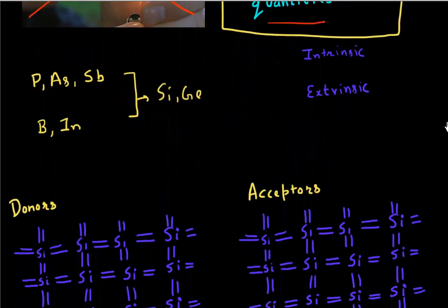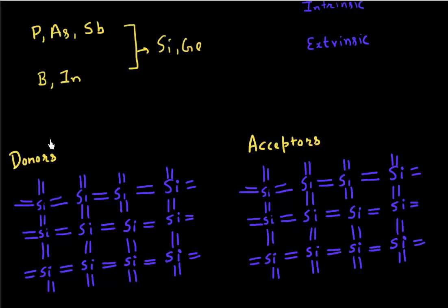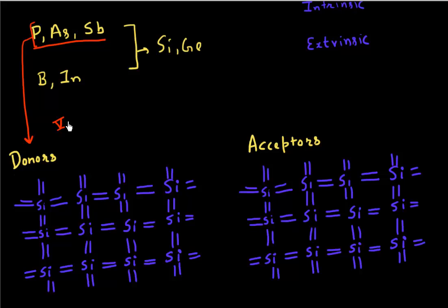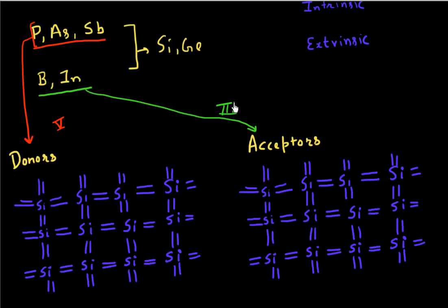The first thing I want you to imagine is what happens in terms of a bond model. What happens if you introduce things like phosphorus, arsenic, or antimony? These are the common donors because they have five electrons in their outermost shell — they belong to group five in the periodic table. And this other set of atoms such as boron or indium, they belong to the group of acceptors, and they have three electrons in their outermost shell. In the periodic table, boron and indium lie in the third column. Now let's see what happens if I add a phosphorus atom into my silicon lattice.